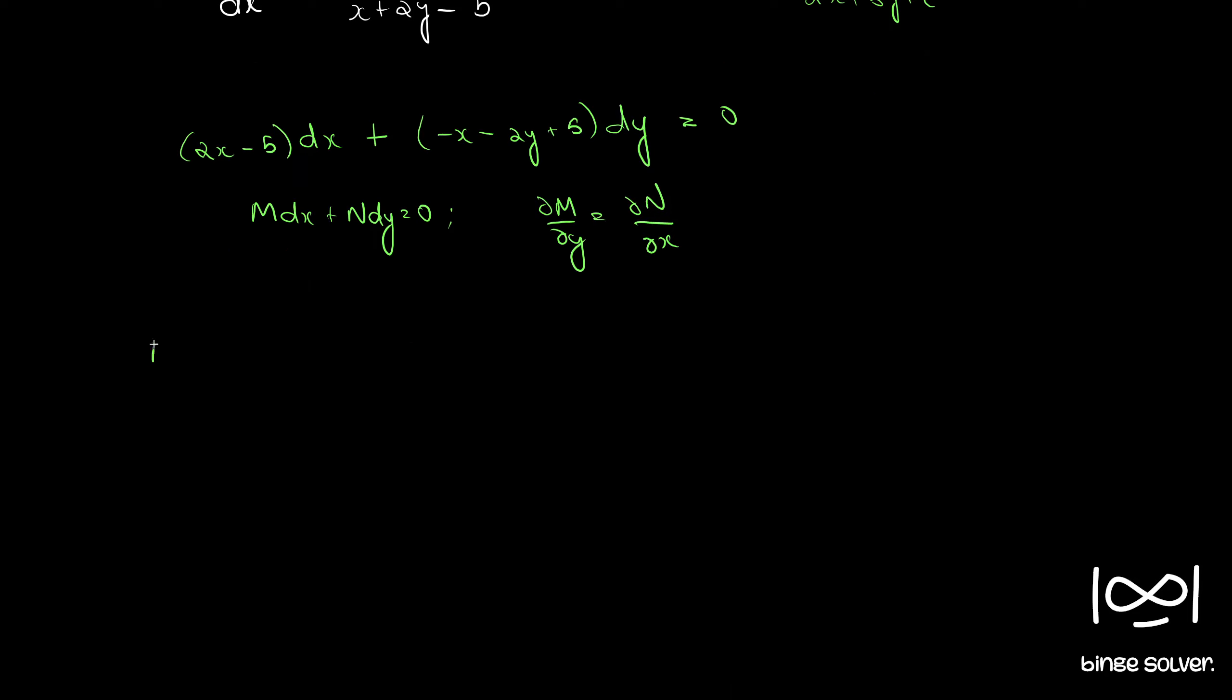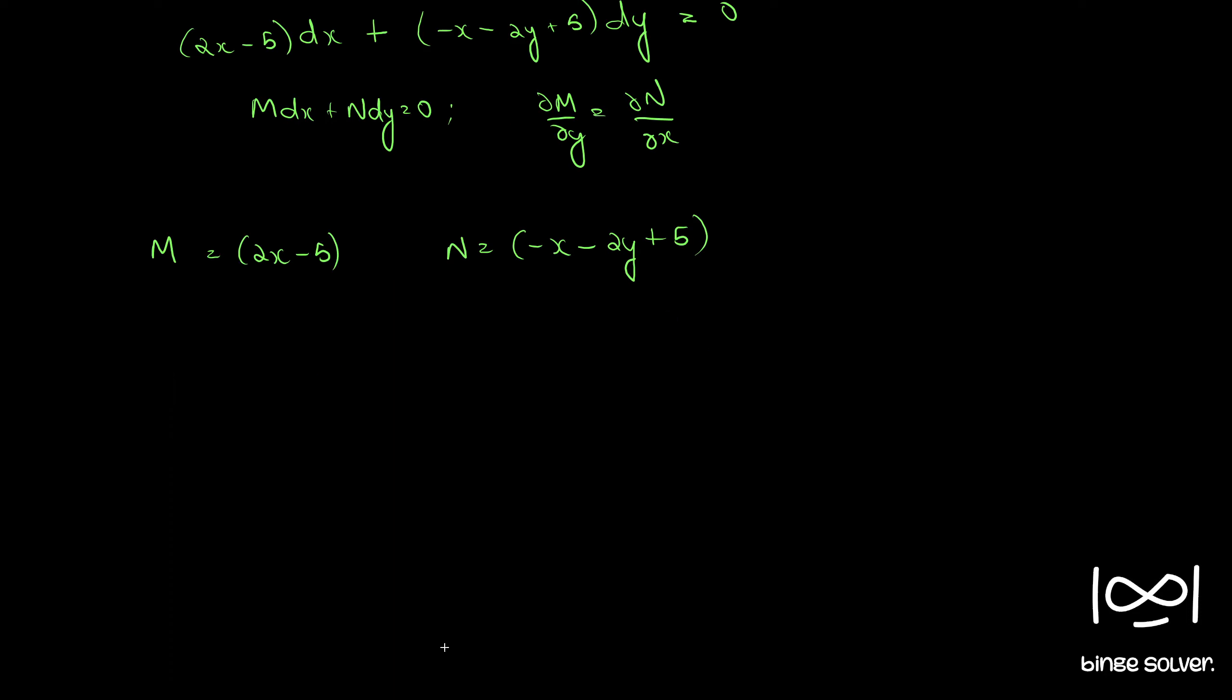So M is 2x - 5, N equals -x - 2y + 5. So ∂M/∂y equal to 0. There is no y term.